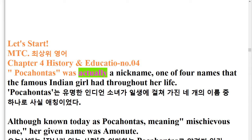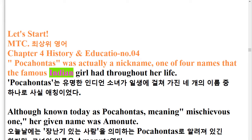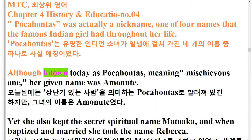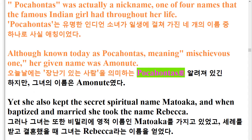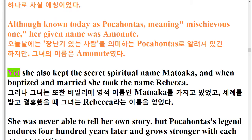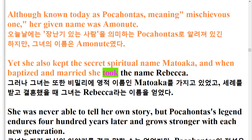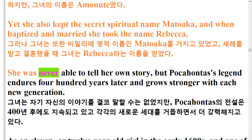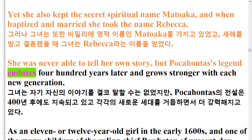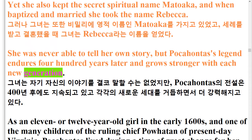Pocahontas was actually a nickname, one of four names that the famous Indian girl had throughout her life. Although known today as Pocahontas, meaning Mischievous One, her given name was Amonut. Yet she also kept the secret spiritual name Matoka, and when baptized and married she took the name Rebecca. She was never able to tell her own story, but Pocahontas's legend endures 400 years later and grows stronger with each new generation.